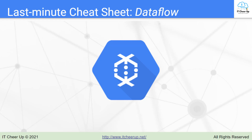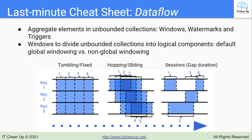Continue Google Cloud Dataflow's last-minute cheat sheet. I went through how to build the Dataflow pipeline in the last video. Now let's take a look at how to aggregate elements in an unbounded collection through windows, watermarks, and triggers.